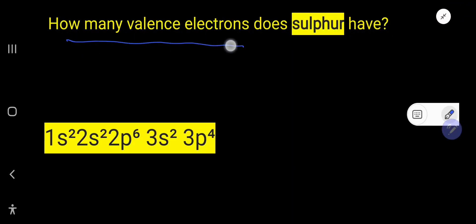How many valence electrons does sulfur have? Sulfur has 6 valence electrons. I will show you two methods to find out the valence electrons for sulfur.